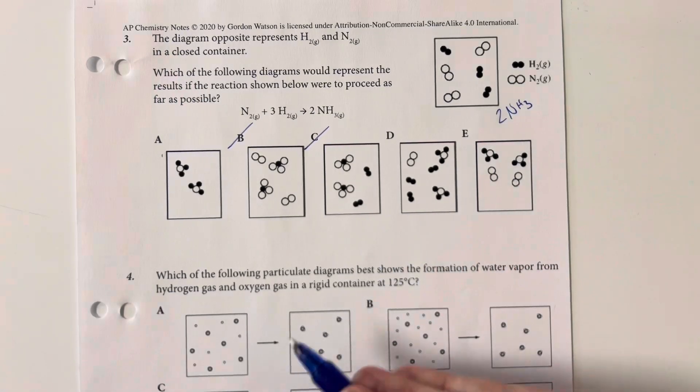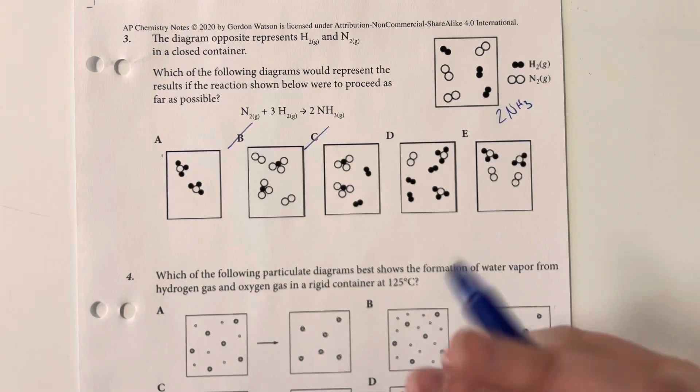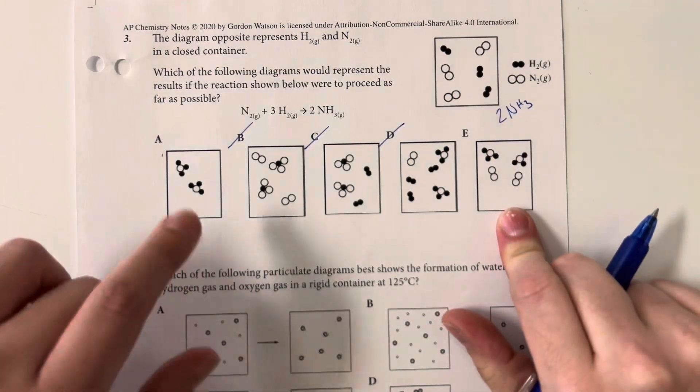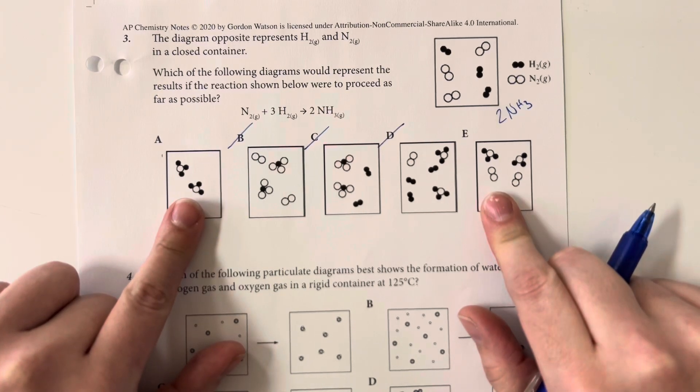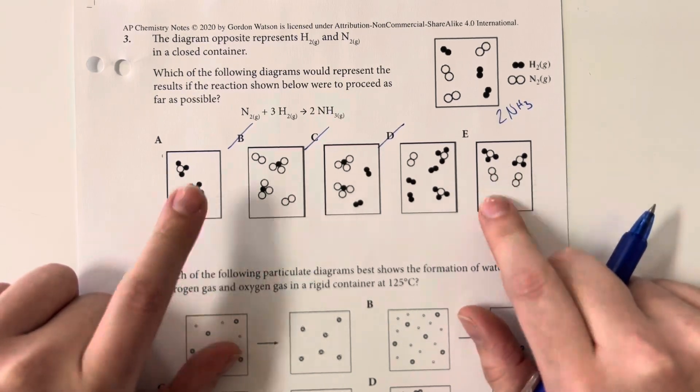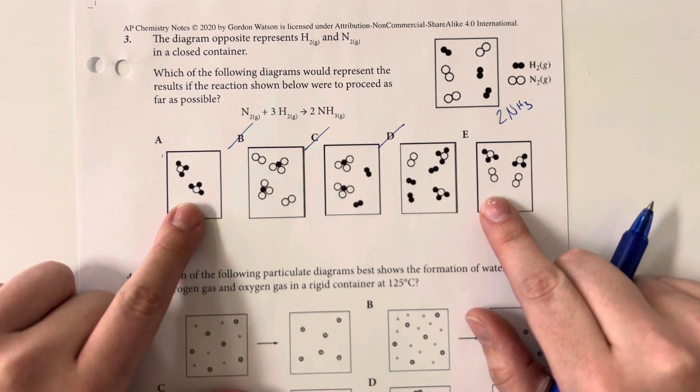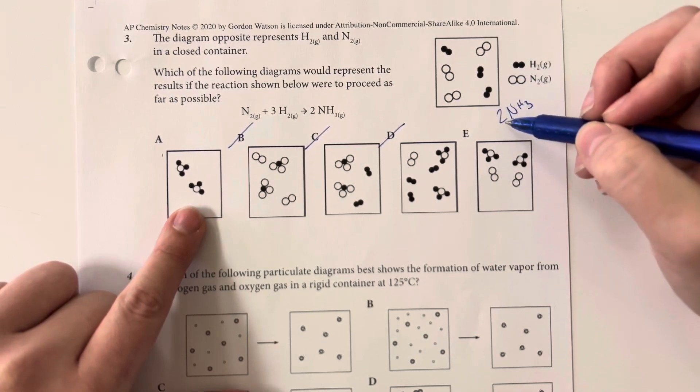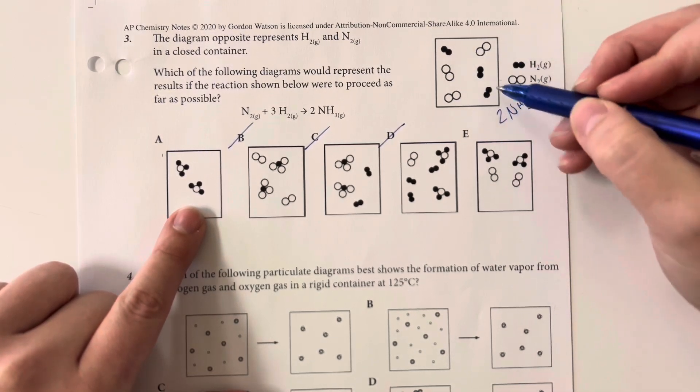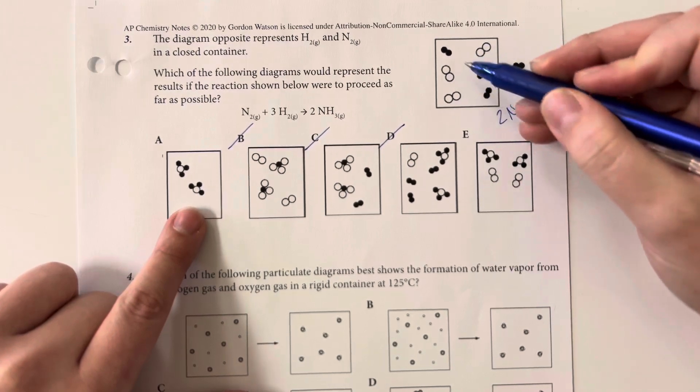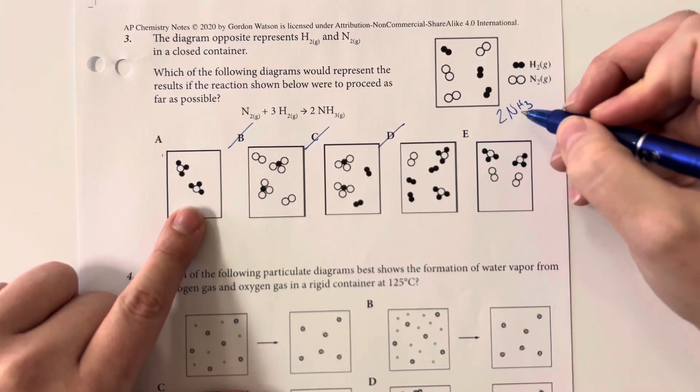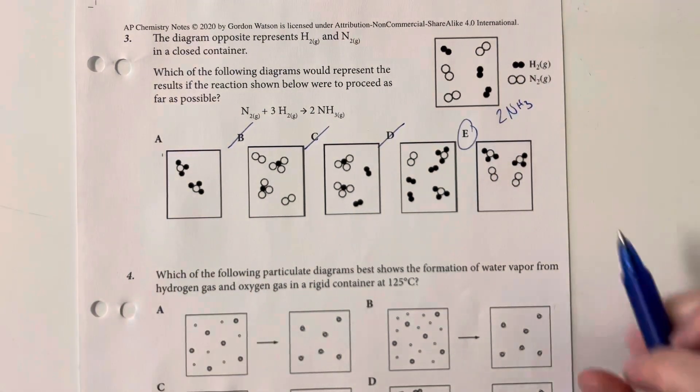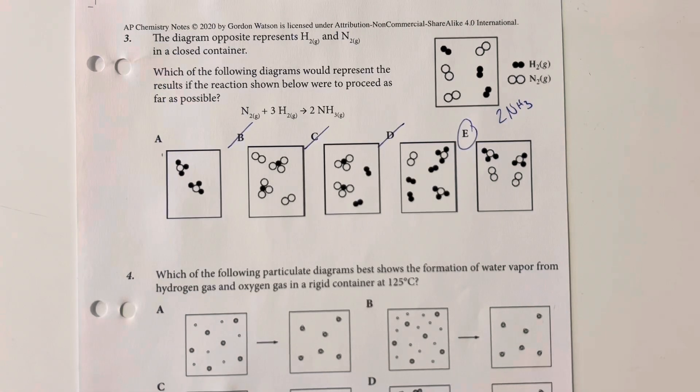I should not be left with both of the reactants if it has proceeded as far as possible, so D is going to be eliminated as well. So now I am looking between option choice A and E, and this is going to be determined based off of the number of remaining reactants. I know that I can only make two ammonias based off of the number of hydrogens that I have present, and so only two nitrogens are going to be used, meaning that there should be two nitrogens left. And so option choice E is the only one where that is true.